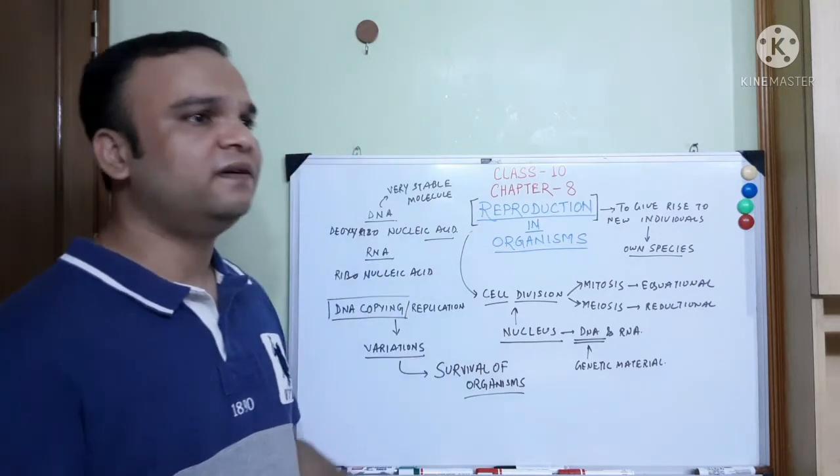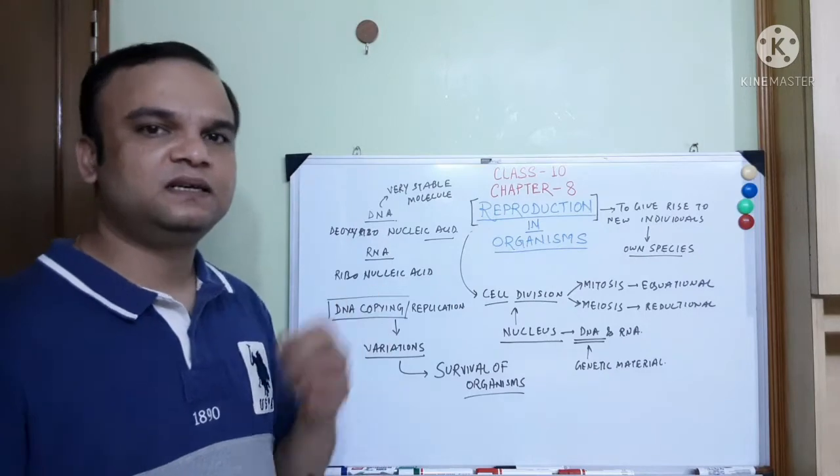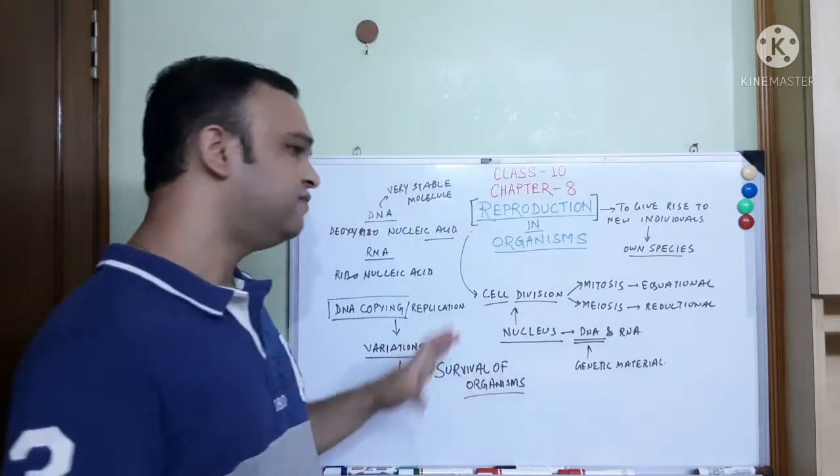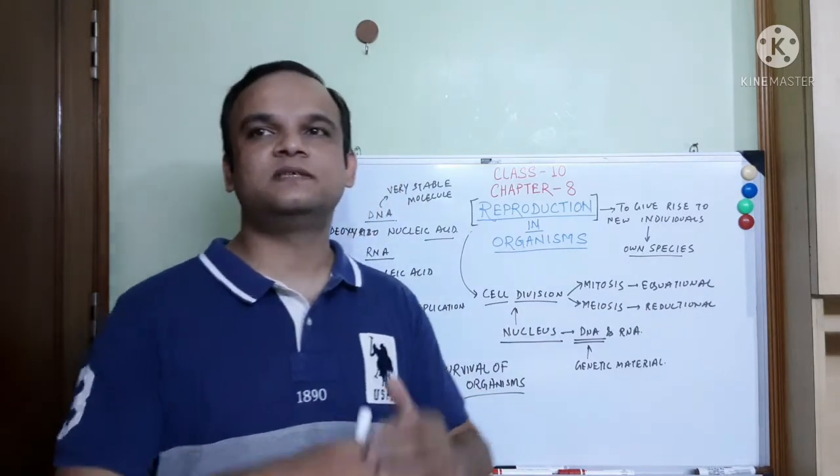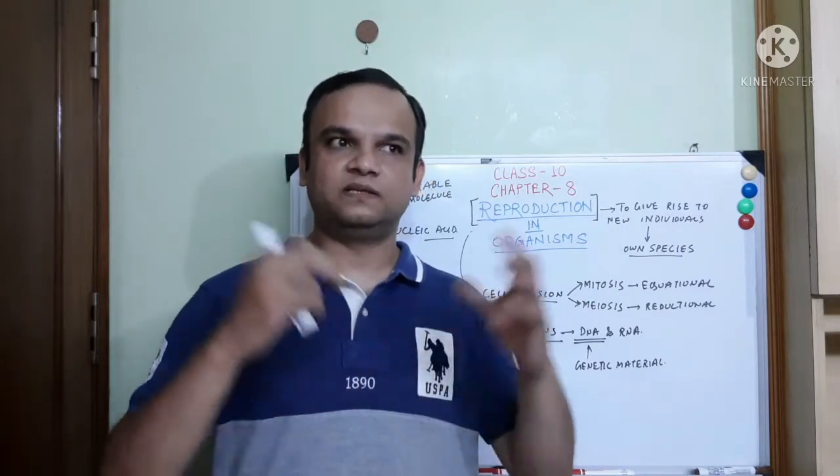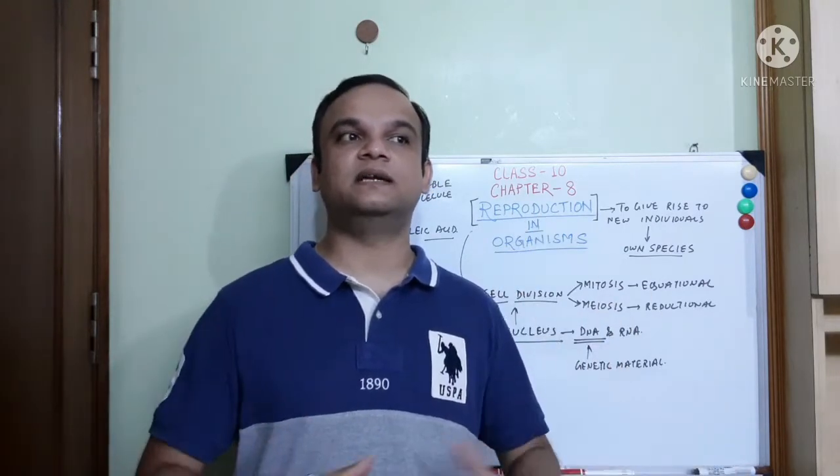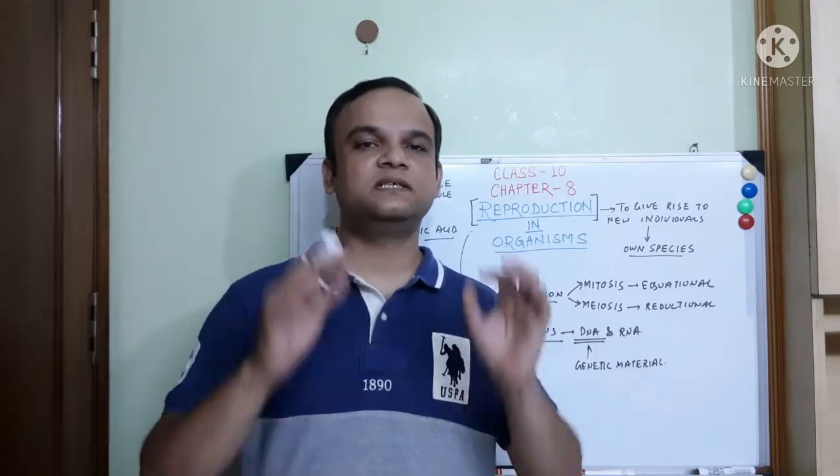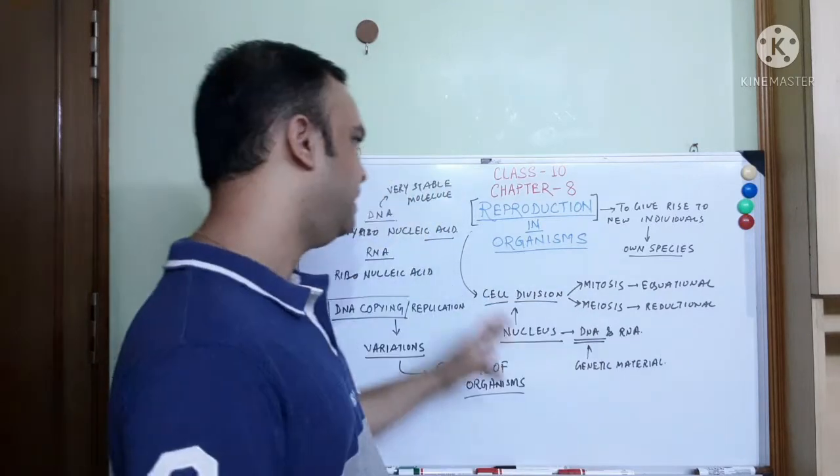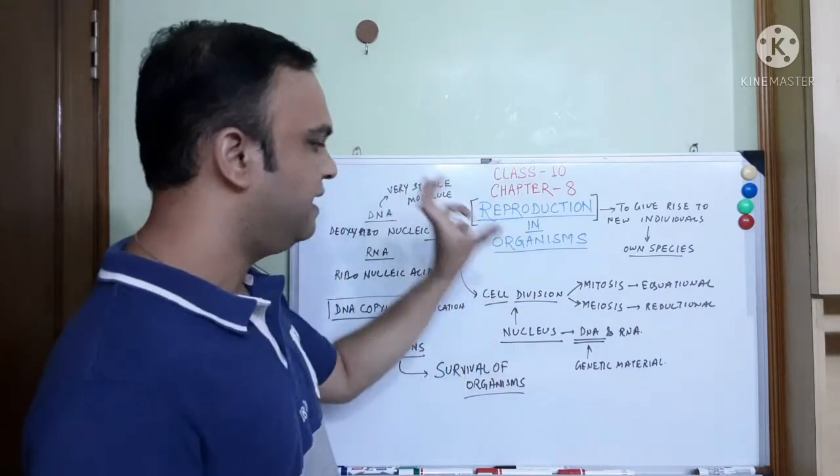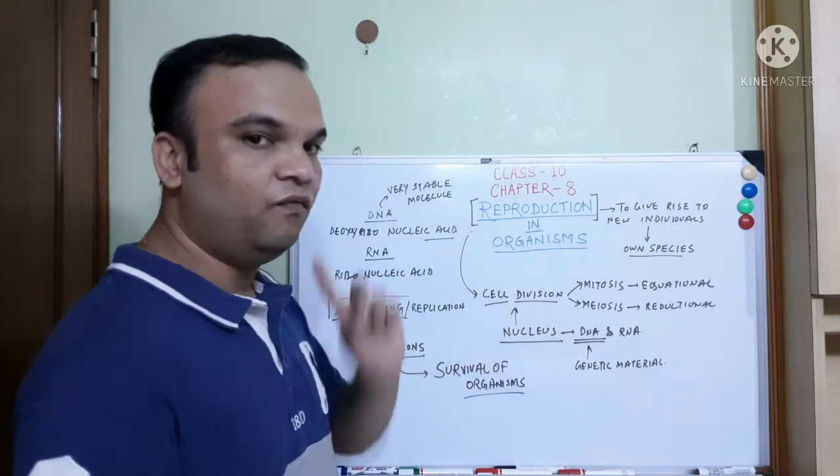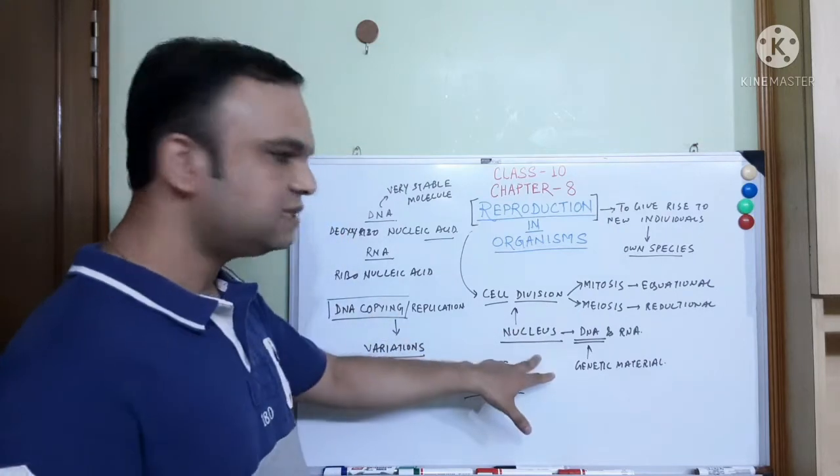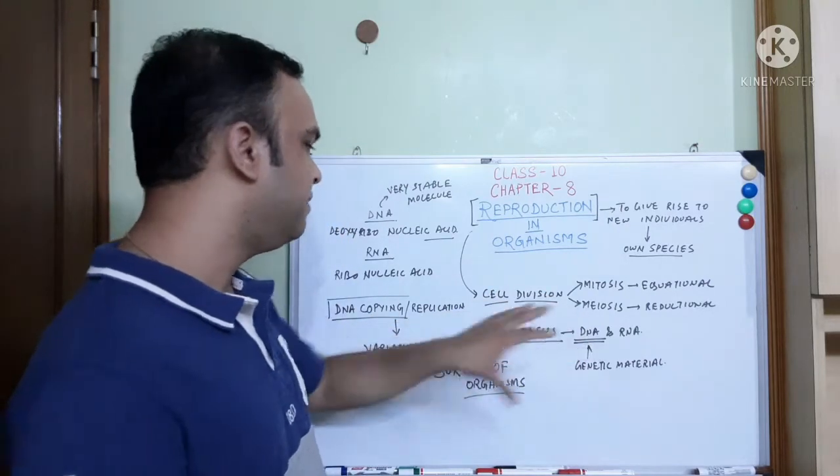This uniqueness is brought about by some amount of changes that creep into the DNA copying mechanism. The details of DNA copying mechanism need not be understood by you right now. But you should understand that these variations are very important for the survival of organisms. That is why you will find that even bacteria, which is a single cell, or amoeba, they also have different varieties.